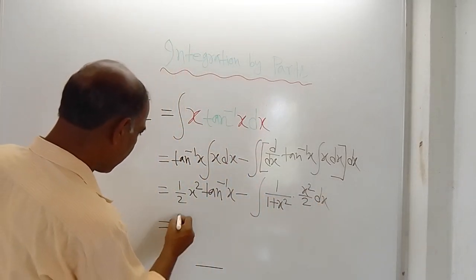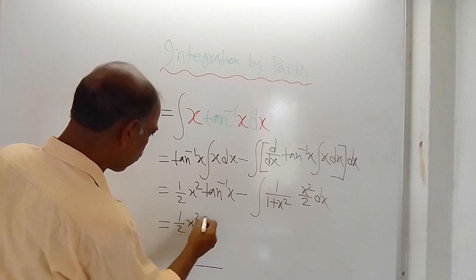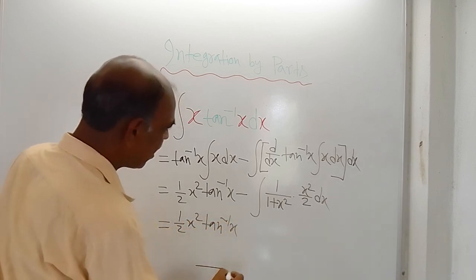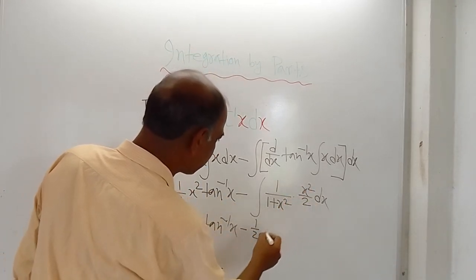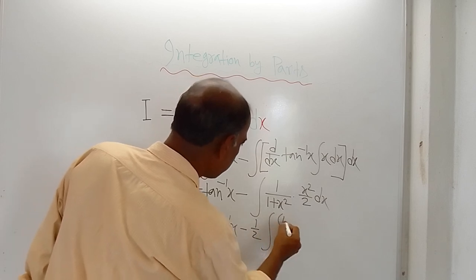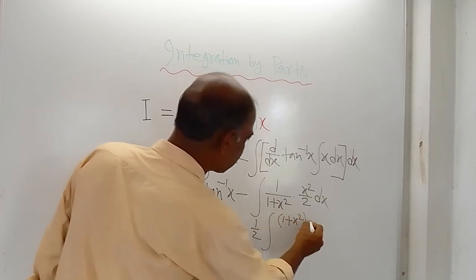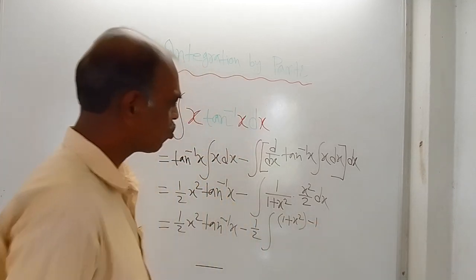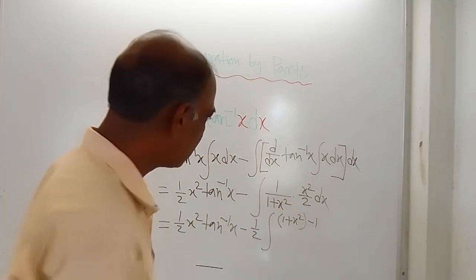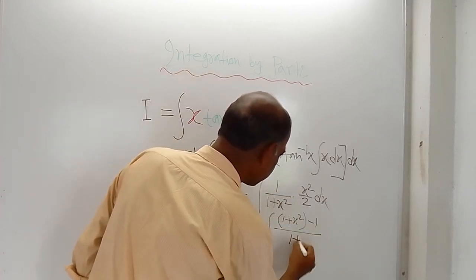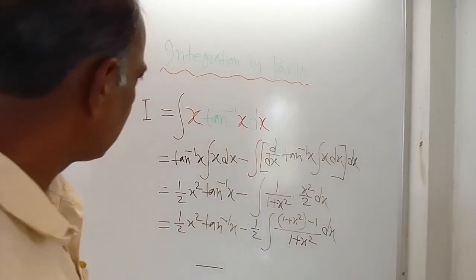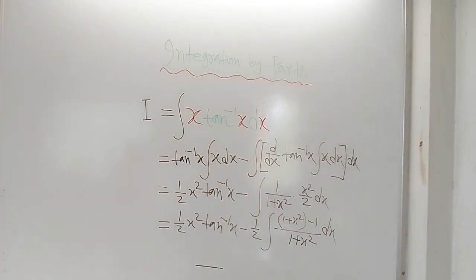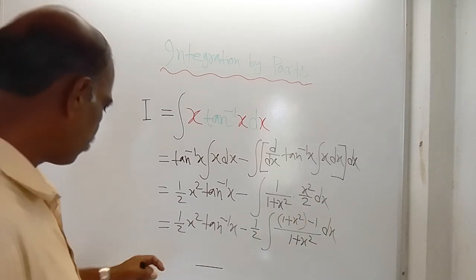So in the very next line you can write half x squared tan inverse x, and here this half is there. So write that half here and this x squared is there. So you write this way: 1 plus x squared, and to adjust this you write minus 1, so again it becomes x squared in the numerator, and in the denominator 1 plus x squared.